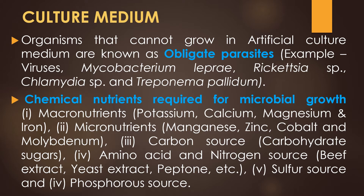Carbon sources, particularly the carbohydrate sugars. Amino acids and nitrogen sources like beef extract, yeast extract, and peptone. Sulphur sources and phosphorus sources. These are all the chemical nutrients required for the growth of microorganisms.